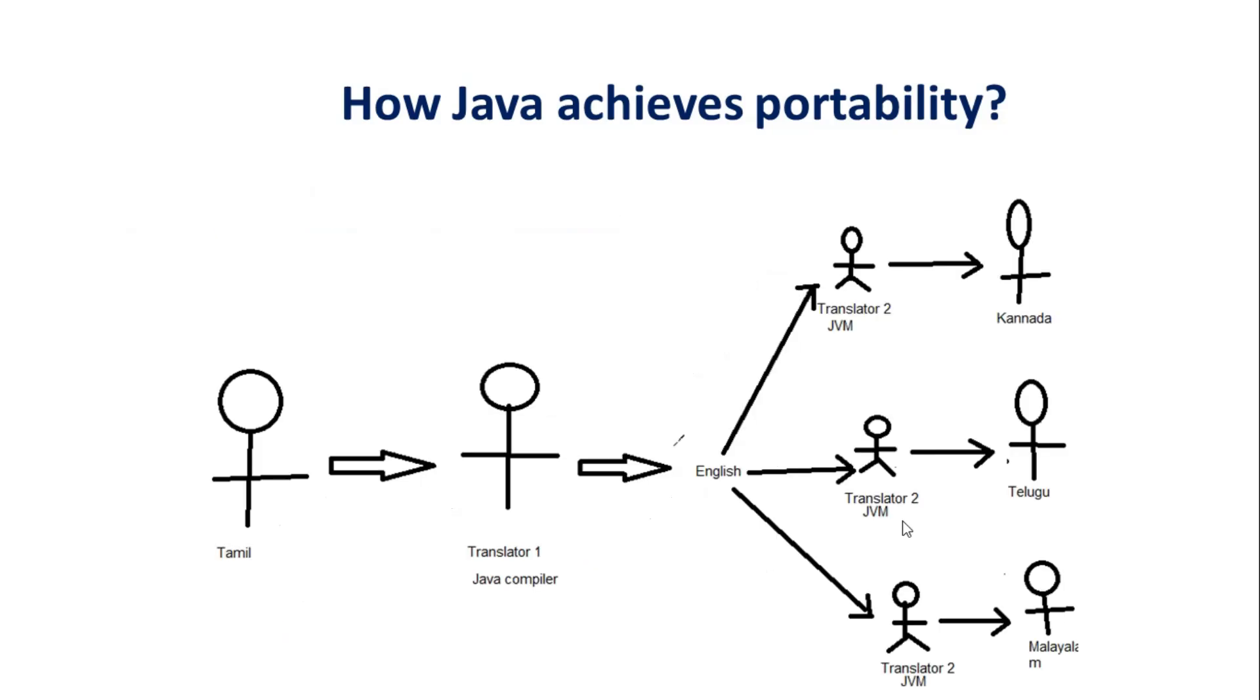It is something like suppose a person speaks in Tamil and a translator translates that into Telugu, then only Telugu person can understand that. But Java is actually a platform-independent language. It is achieved this way: for example, a person speaks in Tamil, whatever he speaks will be converted into English using a translator. The second translator will convert the content in English into a specific language. Suppose if you want to communicate with a Canada person, it will be converted into Canada. If you want to communicate with a Telugu person, it will be converted into Telugu.